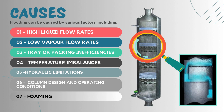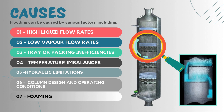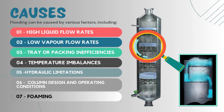The next cause for flooding is hydraulic limitations. Hydraulic limitations within the column — such as insufficient downcomer capacity, tray whipping, or entrainment of liquid droplets by vapor — can contribute to flooding.